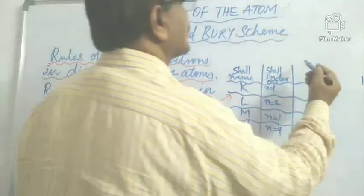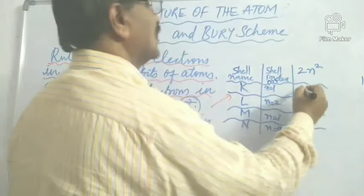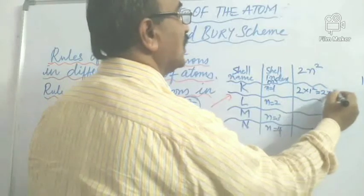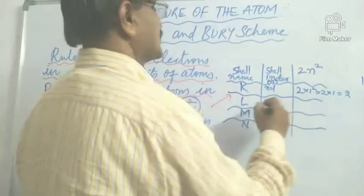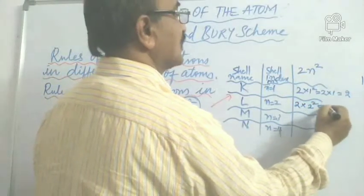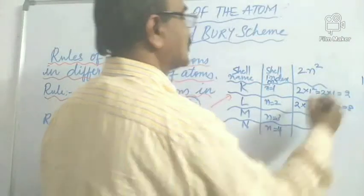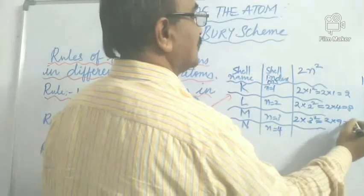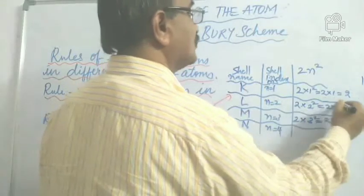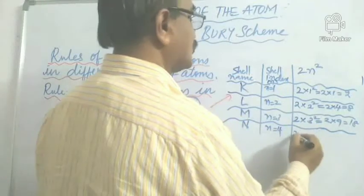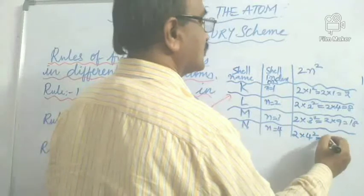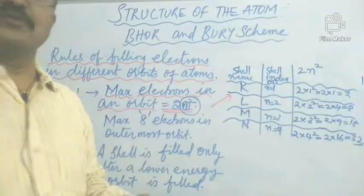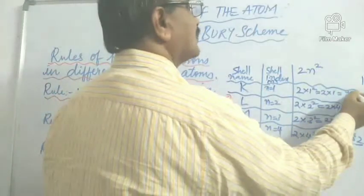When we substitute N = 1, it becomes 2 × 1² = 2 × 1 = 2. For N = 2, that becomes 2 × 2² = 2 × 4 = 8. For N = 3, it is 2 × 3² = 2 × 9 = 18 electrons in the third shell. And for N = 4, it is 2 × 4² = 2 × 16 = 32.